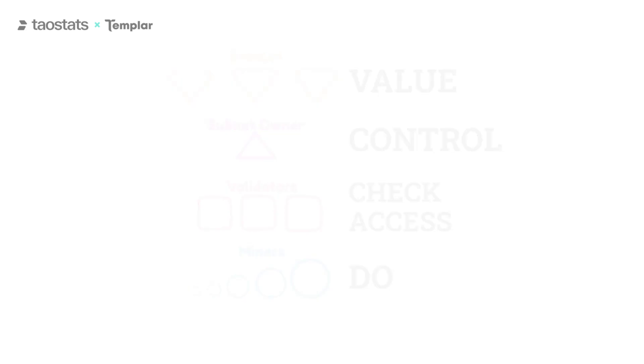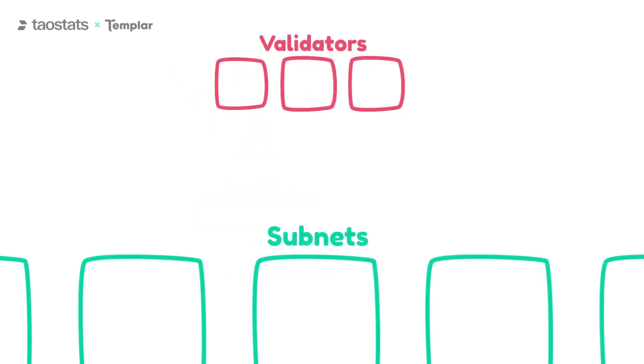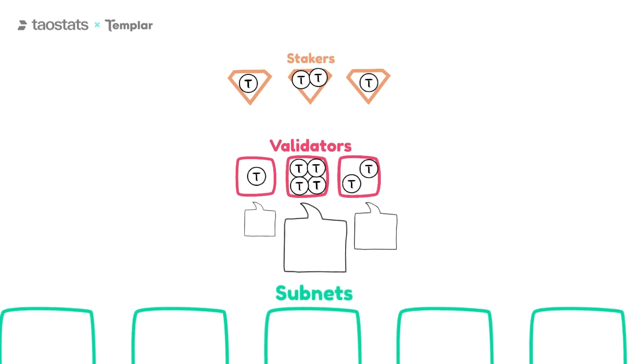Currently, all validators vote to determine subnet emissions. Their vote is weighted based on how much Tau is staked to them. That is, their own Tau plus Tau from their stakers. Sort of like a representative democracy. This has worked well as top validators have a large vested interest in the network and want to see it grow. However, there are two major issues to fix.